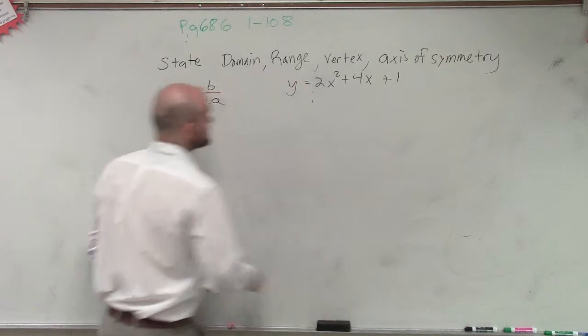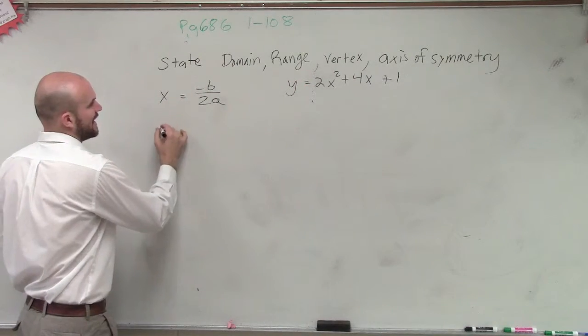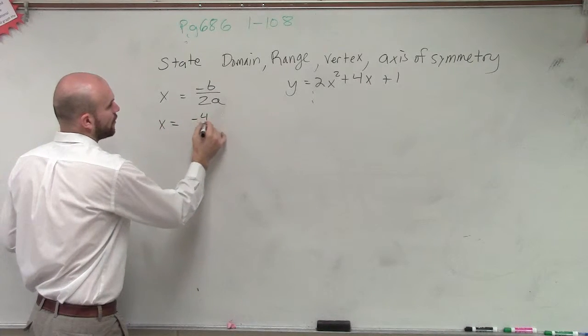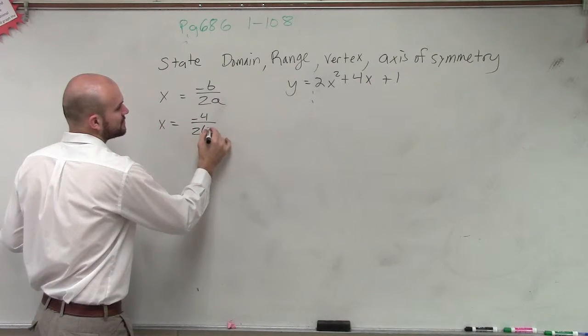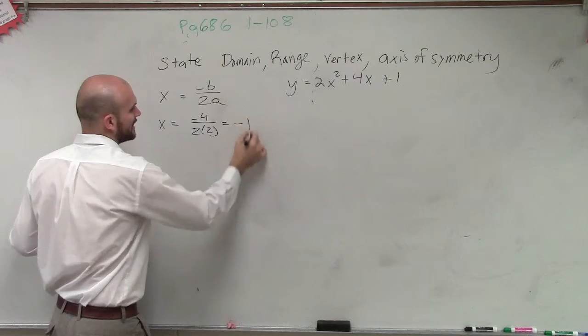So in this case, to find this, we could just say x equals negative 4 divided by 2 times 2, which equals negative 1.